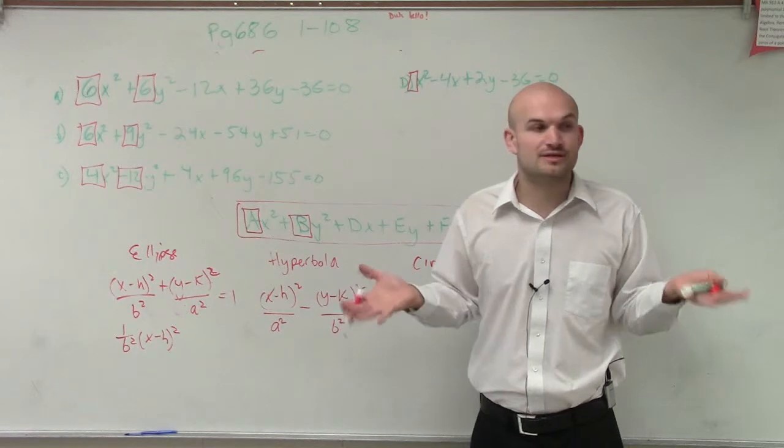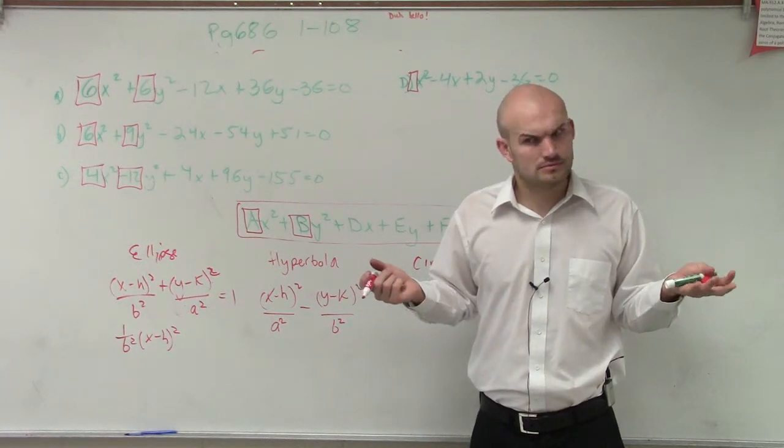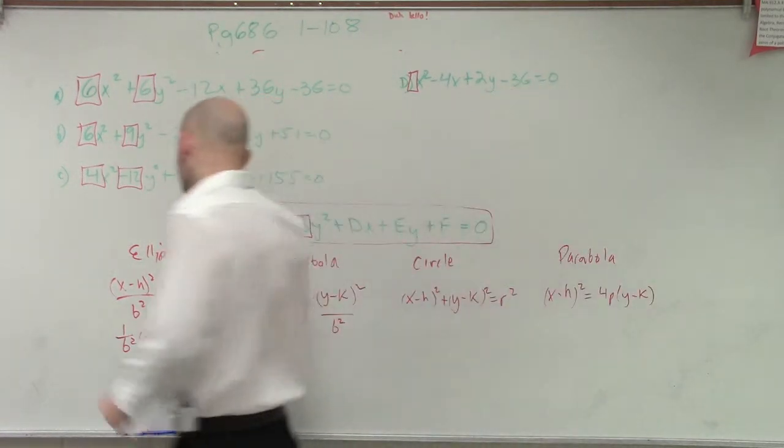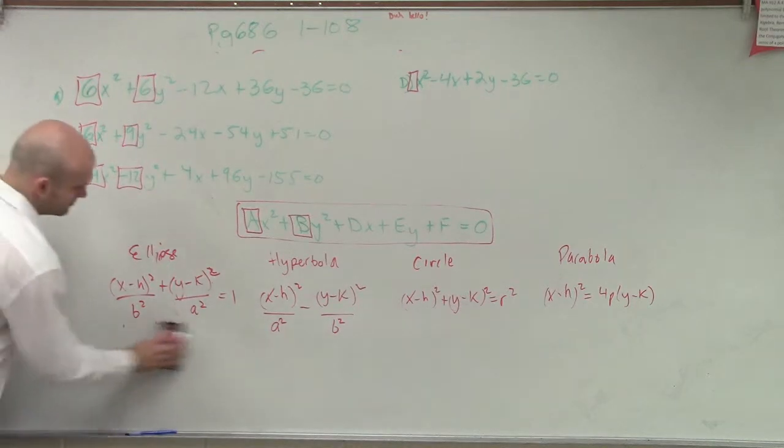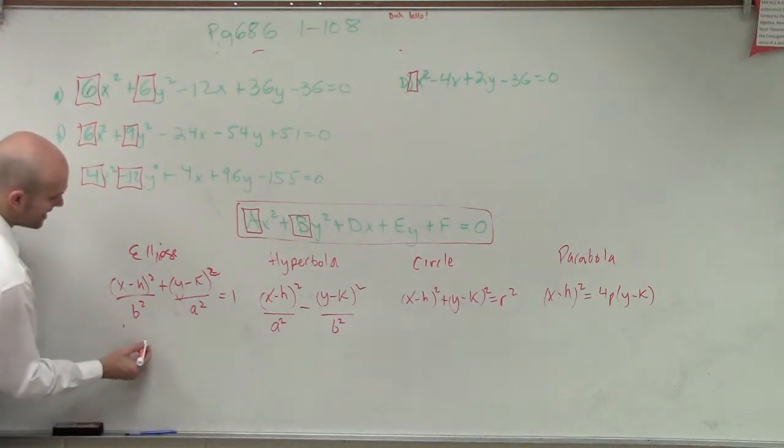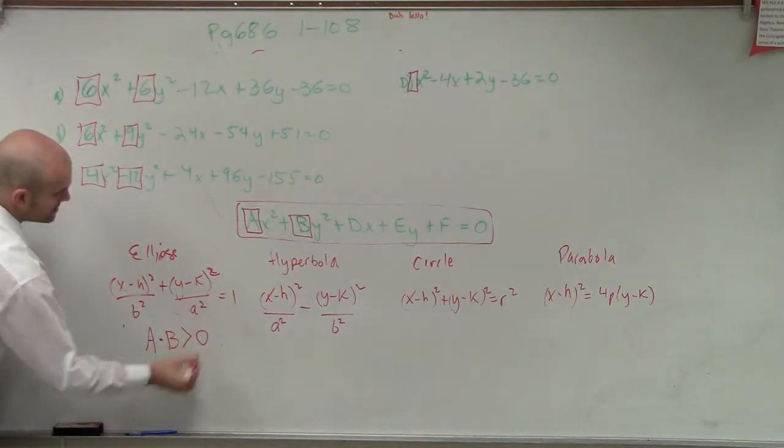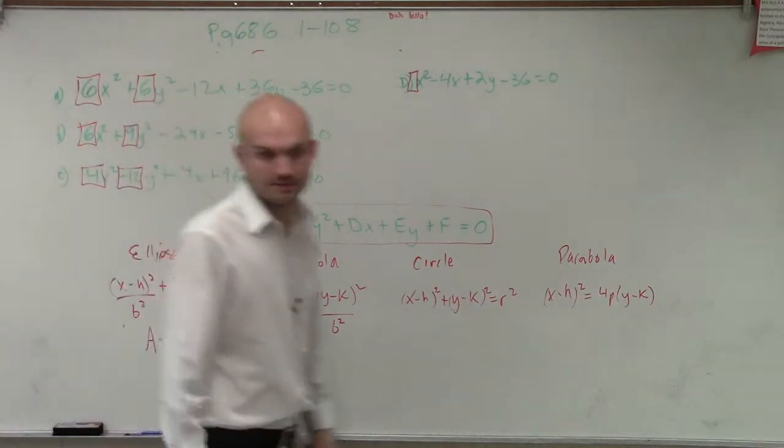If I take two positive numbers and I multiply them, does that have to be larger or smaller than 0? So for an ellipse, what I can do is if I say my A times B is greater than 0, then it is an ellipse.